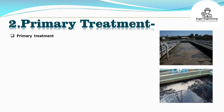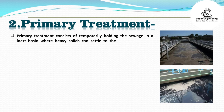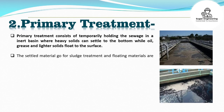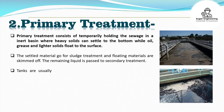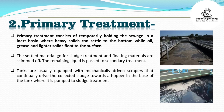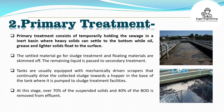Primary treatment consists of temporarily holding the sewage in an inert basin where heavy solids can settle to the bottom while oil, grease, and lighter solids float to the surface. The settled material goes for sludge treatment and floating materials are skimmed off. The remaining liquid is passed to secondary treatment. Tanks are usually equipped with mechanically driven scrapers that continually drive the collected sludge towards a hopper in the base of the tank where it is pumped to sludge treatment facilities. At this stage, over 70% of the suspended solids and 40% of the BOD is removed from effluent.